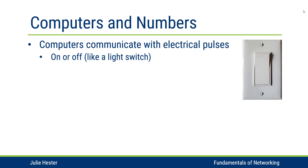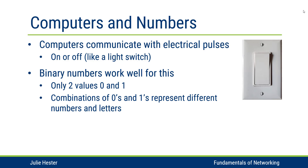Computers communicate with each other using electrical pulses, and this is like a light switch where the pulse is either on or off. It works really well with the binary number system because the binary number system only has two values, zero and one, and different combinations of zeros and ones are going to represent different numbers and letters.